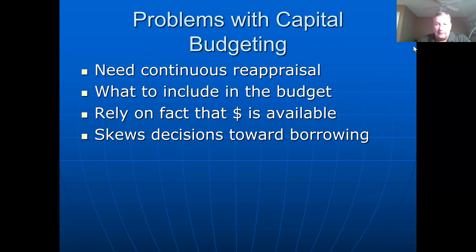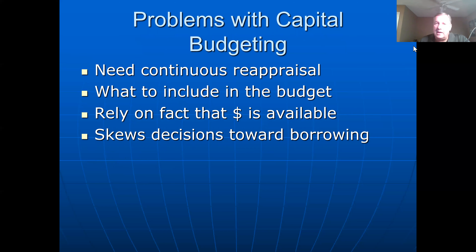Capital budgeting has some problems we need to be aware of. The one major problem is the need for continuous reappraisal — we must always reappraise and revise our capital improvement plan based upon new contingencies and circumstances. Second, the decision of what to include or exclude in the capital budget is sometimes a relatively subjective one. Politics unfortunately play a role in some of these decisions, so it's not as completely empirical and quantitative as it may look on face value.